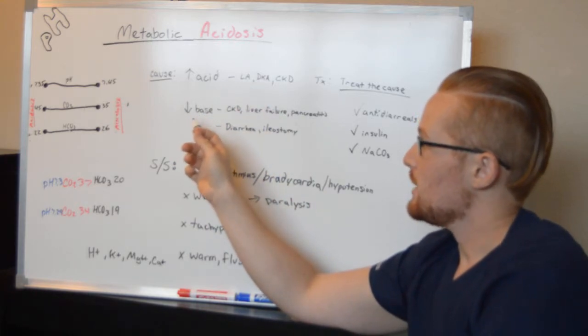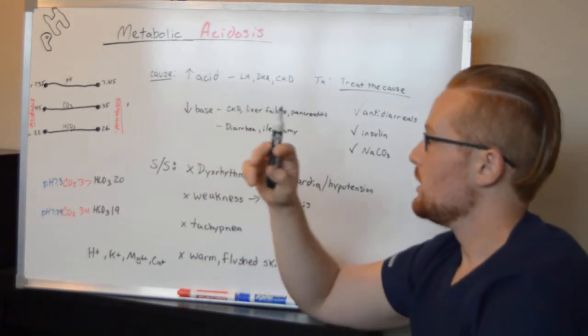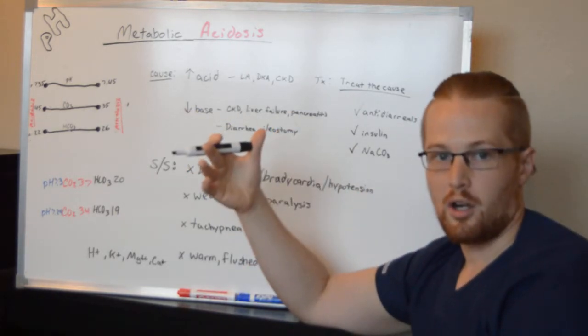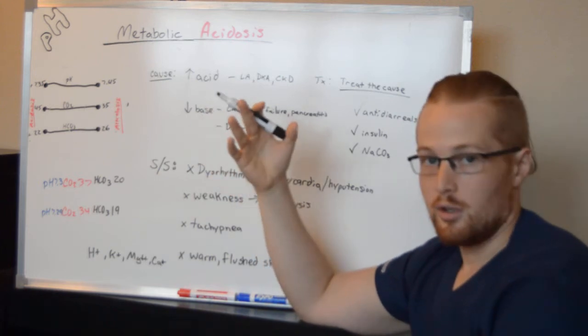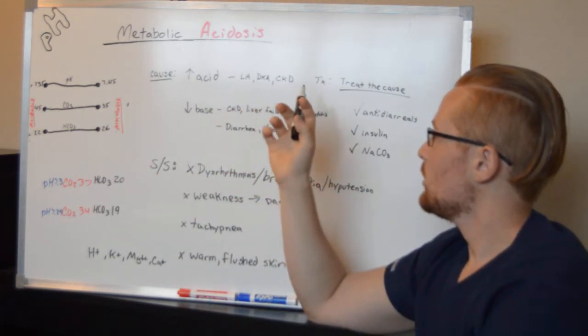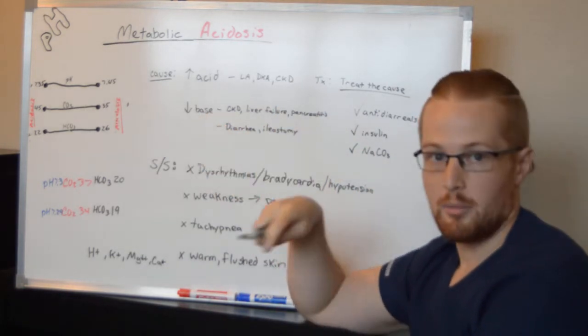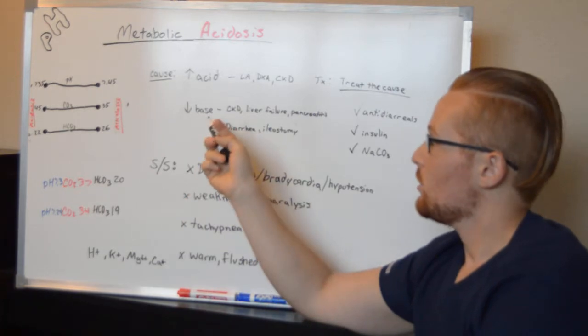What can cause too little base? Because base and acids interact with each other, chronic kidney disease - the kidneys produce bicarbonate, and if they're unable to do so, you don't have enough base. This is similar with liver failure and pancreatitis.